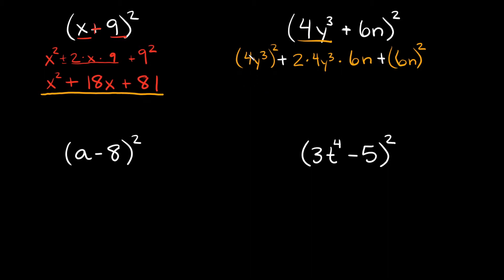Now we just have to simplify. Remember, we have to apply this exponent to every term inside the parentheses — so we have to apply it to the 4 and to the y cubed. So if we apply it to the 4, we're going to have 4 squared. And then to y cubed, it would be y cubed raised to the second power. So 4 squared equals 16, and y cubed raised to the second power — if you remember how to raise a power to a power, you multiply the exponents together. So 3 times 2 equals 6, giving us y to the sixth power. And then we're adding that.